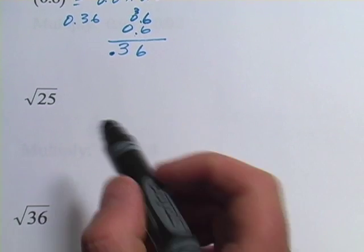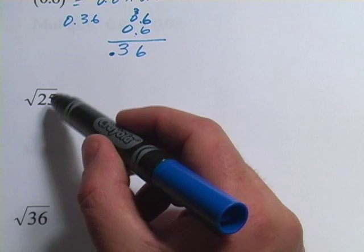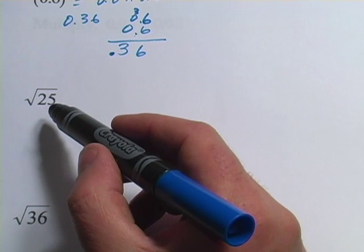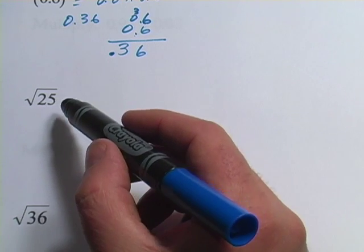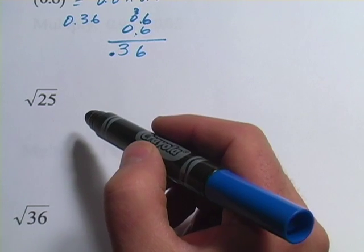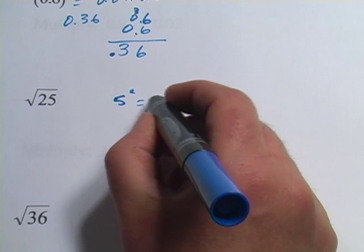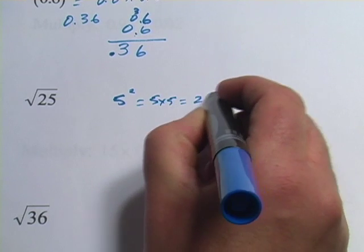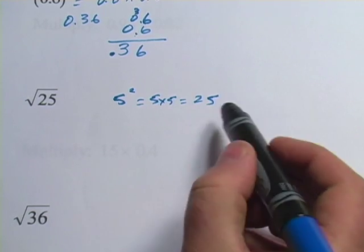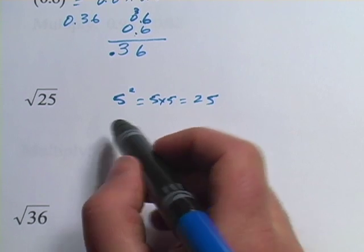Now a square root, which is this little weird looking symbol, this says the square root of 25. Well, the square root of something is the opposite of squaring. So if 5 squared, which equals 5 times 5, equals 25, then if you go backwards, you're taking the square root.